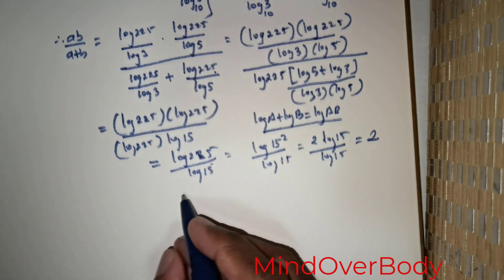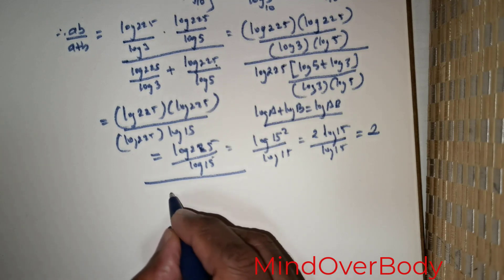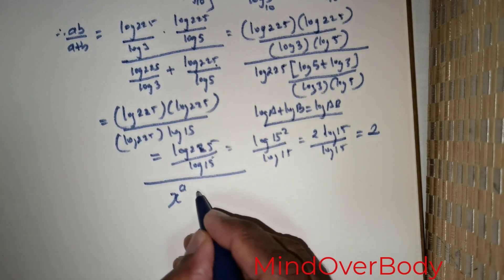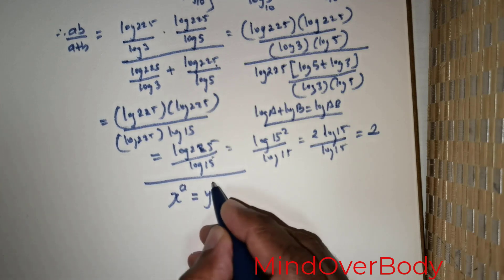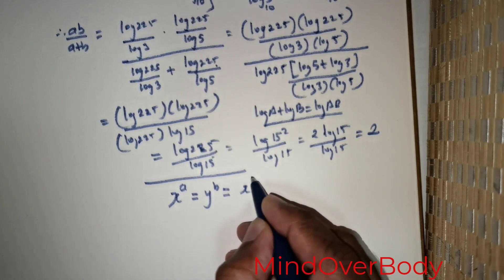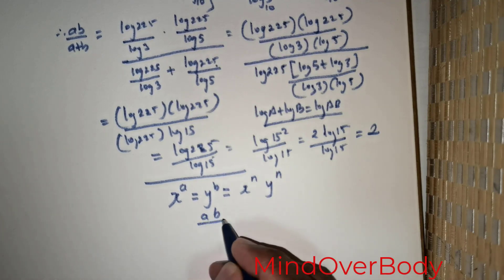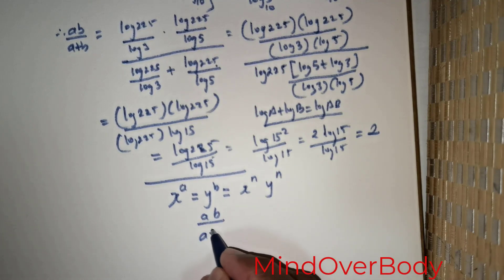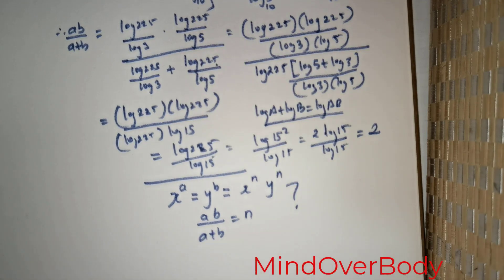So that is the final method. I wish to pose a question to you: can we generalize this result? If x^a = y^b = (x^n · y^n), can we write ab over a plus b equals n? Is that okay — can we generalize these results? Please put in your comments. Thank you, students.